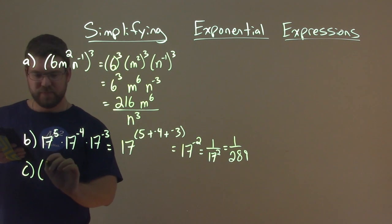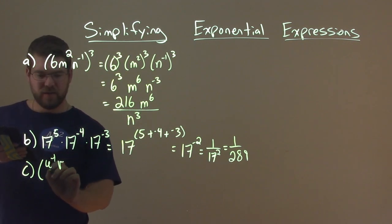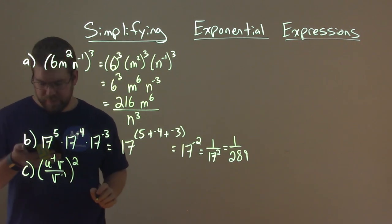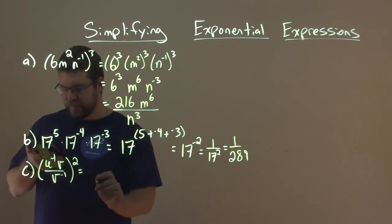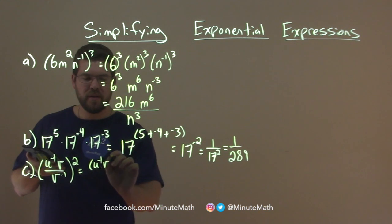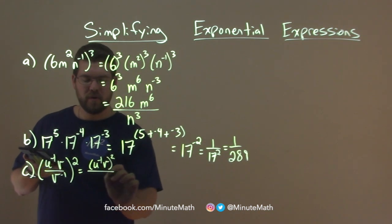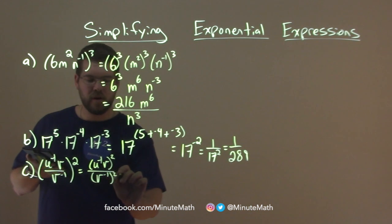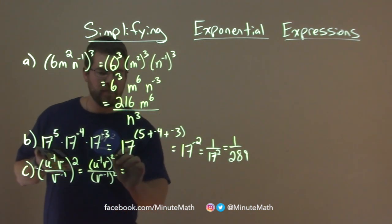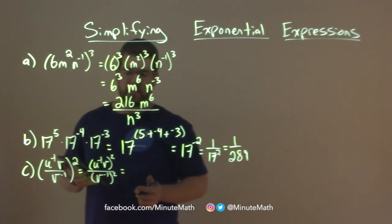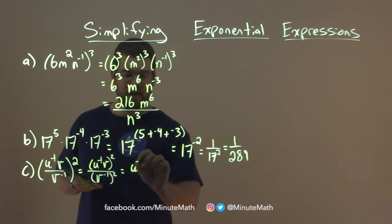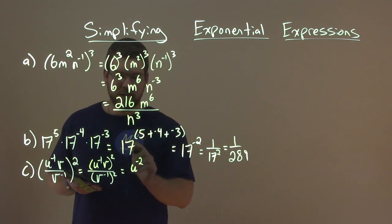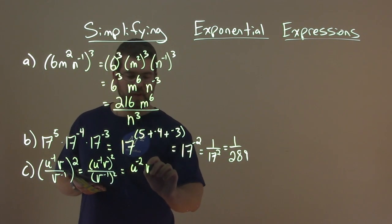Using v's — u to the negative 1, v, over v to the negative 1 power, all squared. We can distribute that square to the numerator and the denominator. So we have u to the negative 1, v, over v to the negative 1, all squared. Let's distribute that square by multiplying it to each exponent. So negative 1 times 2 is negative 2 — we have u to the negative 2. And v to the first power, 1 times 2 is 2 — we have v squared.